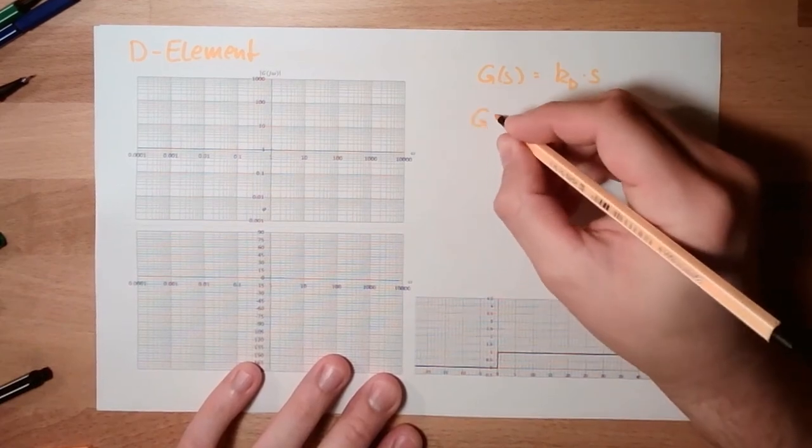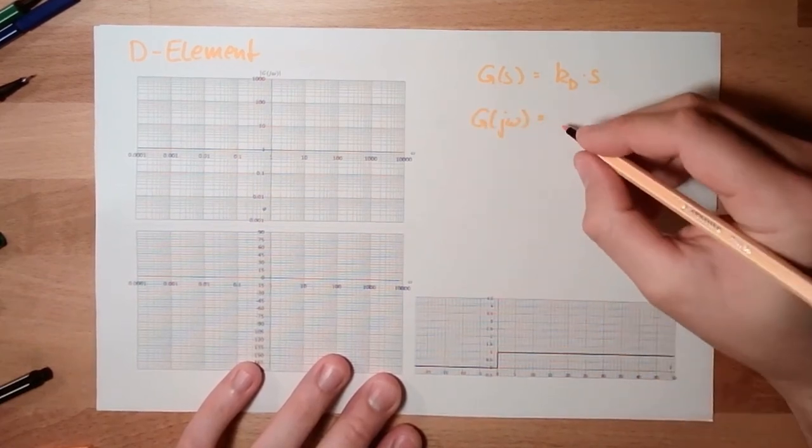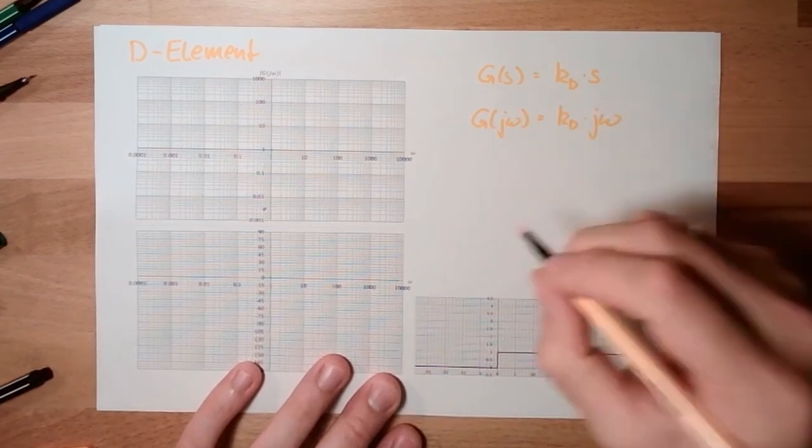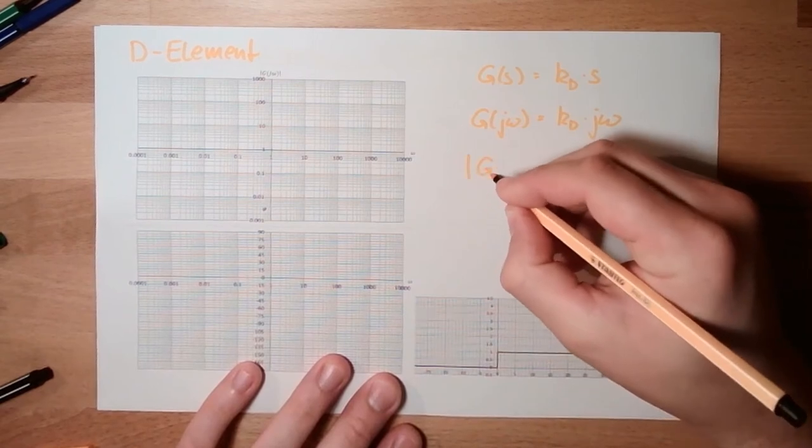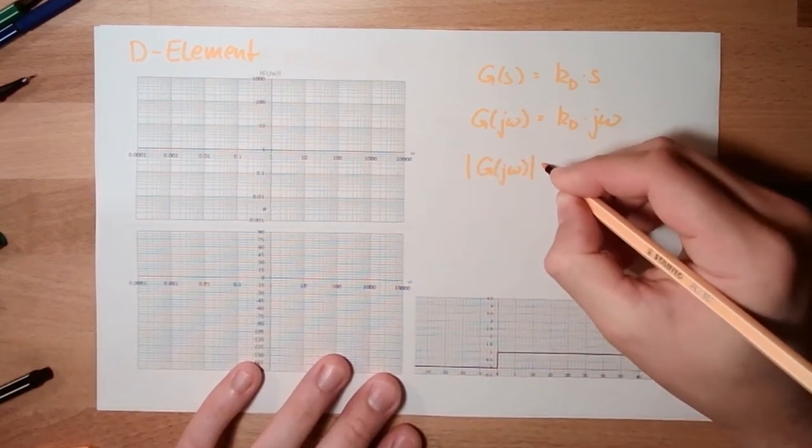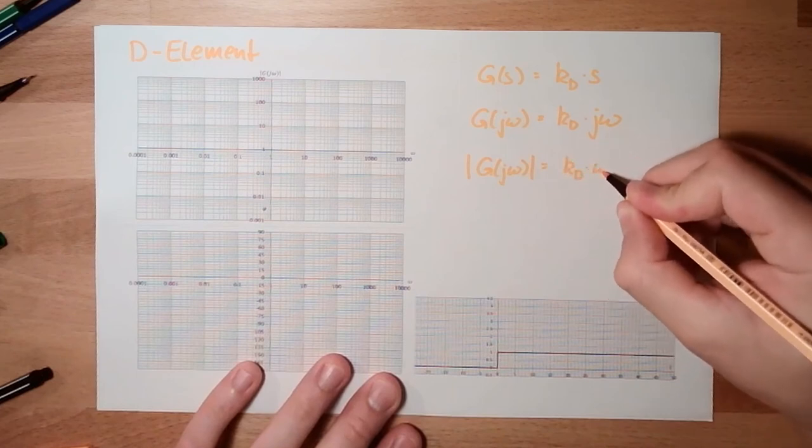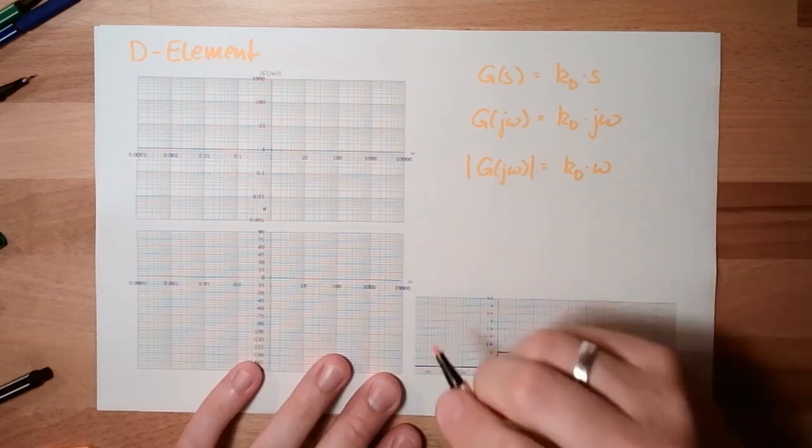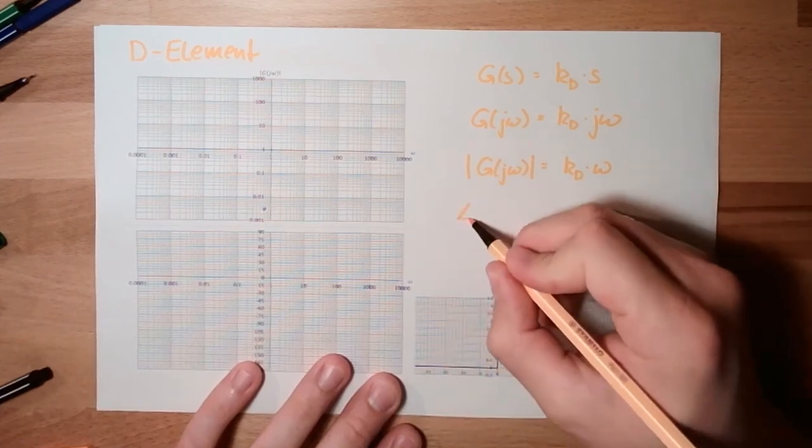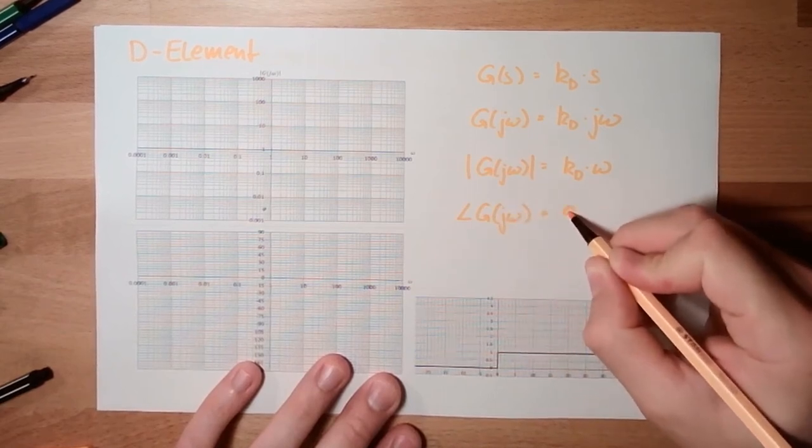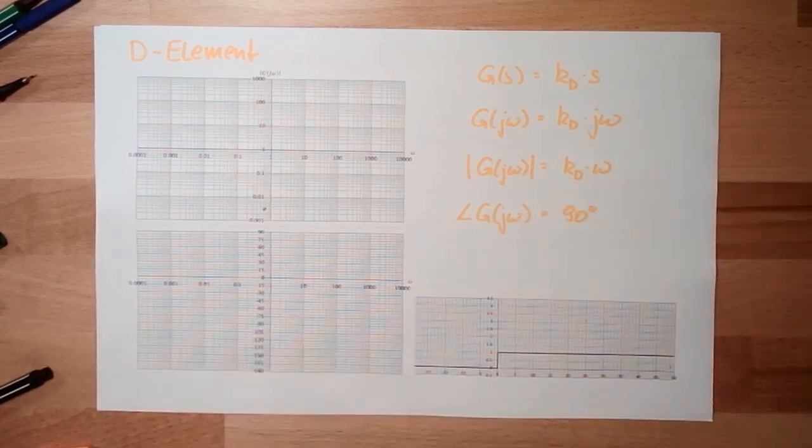So, this G from J omega equals KD multiplied J omega. Absolute value equals KD multiplied by omega. So, argument is always 90 degrees.